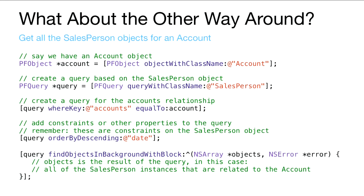The other direction is where it gets cool — you can get all salesperson objects for a given account. Create a query on salespeople where the accounts column (which is a relation) is equal to the account object instance. Add constraints, execute the query, and you get all the salesperson instances related to that account. This is a classic many-to-many relationship, and it's incredibly easy to create these relationships between different objects in just a few lines of code.